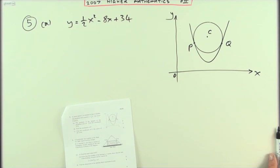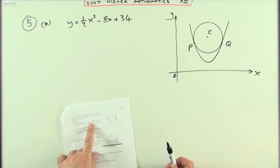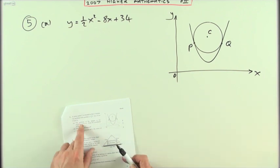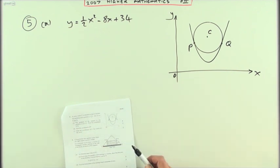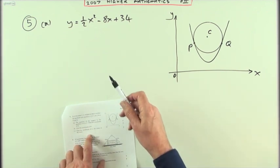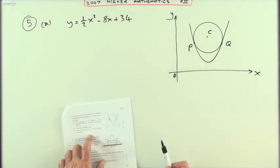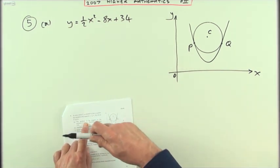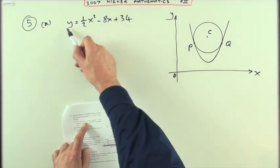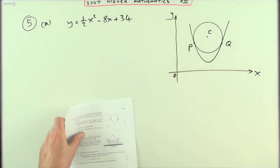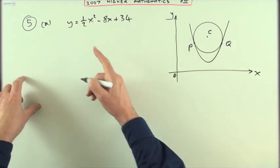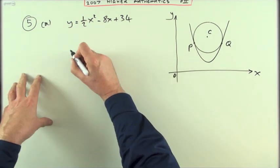First part: the gradient of the tangent to the parabola is four — find the coordinates. Those are the key words: gradient of the tangent means derivative. The derived equation will give you the equation of the gradients. If you know the gradient, you can work back for x, then put it back into the coordinate equation. Nothing to do with the circle yet, so this first part is easy.